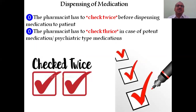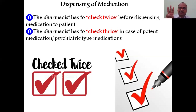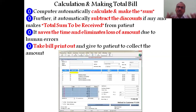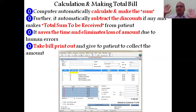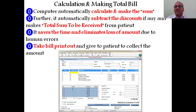When dispensing medication, check twice for ordinary drugs and check two or three times for potent medications. For calculating and making the bill, without the computer it is not possible. The computer automatically calculates, makes the sum, subtracts any discounts, and gives the total amount to be received. It saves time and eliminates loss of money during calculation. Then take a printout of the bill with the help of the computer and printer.